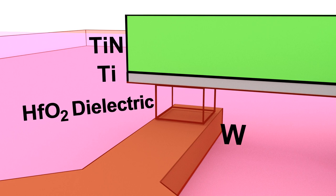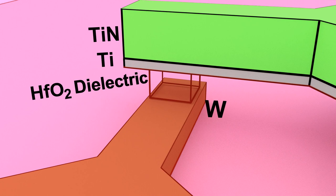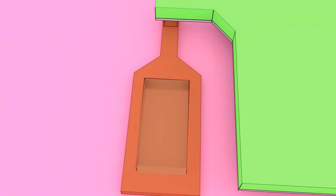Finally, contact windows to the bottom electrode were opened by dry etching of the hafnium oxide layer to allow electrical contact to the bottom electrode.